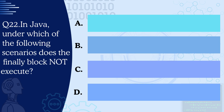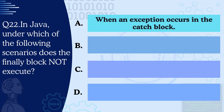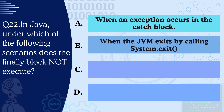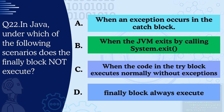Question 22: Under which scenario does the finally block not execute? A — when an exception occurs in the catch block. B — when the JVM exits by calling System.exit. C — when try-catch executes normally without exceptions. D — finally block always executes. The correct answer is B — when the JVM exits by calling System.exit. That's an exceptional case where even the finally block does not execute.